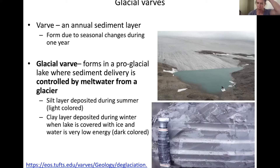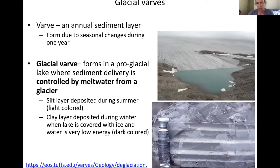During winter on these lakes there's lake ice cover, and meltwater from the glacier stops because it freezes — it's a really super quiet water environment so you can get clay deposited. When summer happens, the lake ice cover melts and melting starts on the ice sheet, washing in sediment and creating currents in the lake. That mixes up the lake water so the clay stays in suspension, but coarser material — typically silt — gets deposited. The lighter colored layer is mostly silt. Together, the dark gray winter layer and the light gray summer layer are one year.